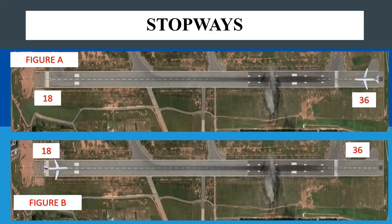So let's look at the figure on the screen. On figure A above, you will observe that it has a displaced threshold. This area adds up to the takeoff run available for the aircraft on your screen. Therefore, if there is a need to abort takeoff, the aircraft has more pavement available to complete the aborted takeoff without any challenge. However, if you look at figure B below, the distance from threshold to threshold serves as the takeoff run available, which makes it shorter for the aircraft to either takeoff or land. It also makes it shorter for the aircraft to stop if there is an aborted takeoff.